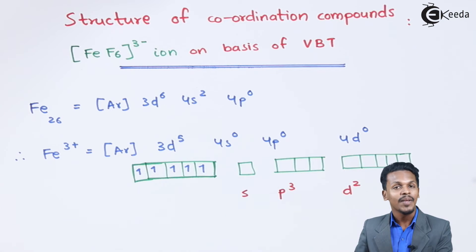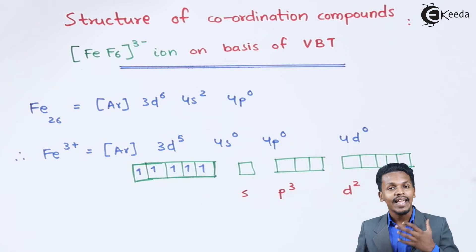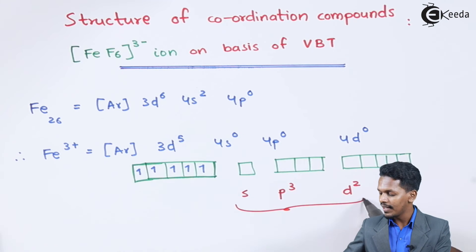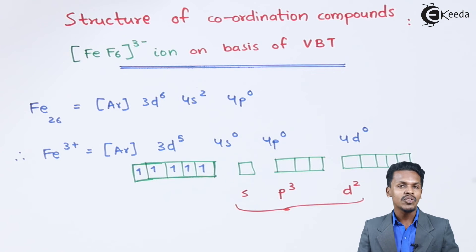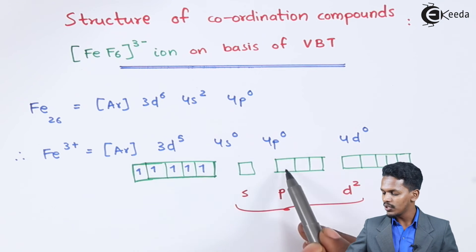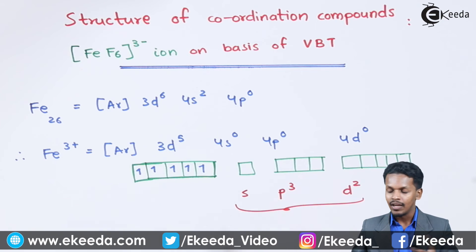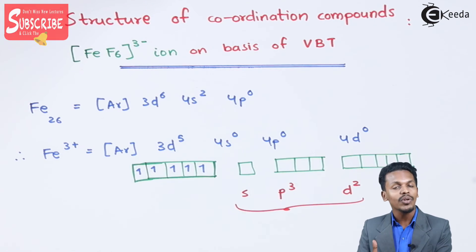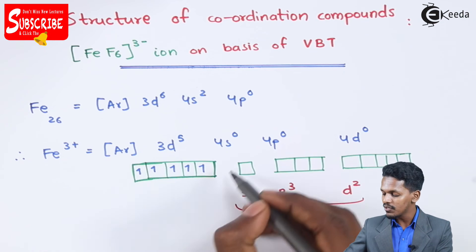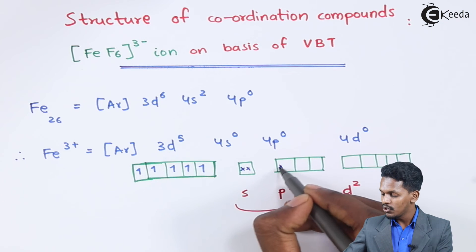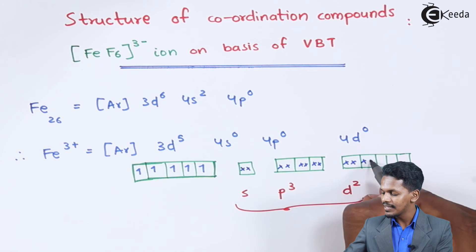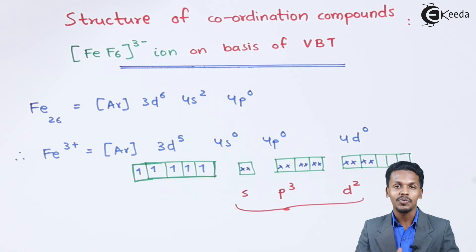The hybridization of the Fe³⁺ ion is therefore sp³d². Based on this, the structure is octahedral. These six empty orbitals of the metal overlap with the ligand electrons — each fluorine donates a lone pair of electrons into an empty orbital — forming coordination covalent bonds. So we have six fluorine atoms (1, 2, 3, 4, 5, and 6) overlapping with these orbitals.